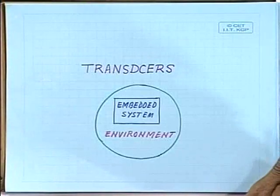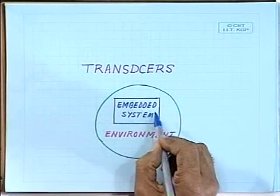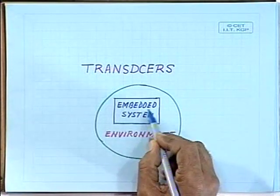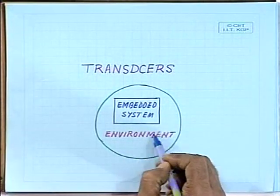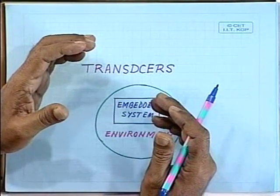We are discussing embedded systems. As you know, microcontrollers are normally used to realize embedded systems, and embedded systems interact with the environment. Normally, a general purpose computer interacts with a human being. The type of input-output devices required for that purpose are a little different — you require a keyboard, a mouse, a video display unit for interaction with the user.